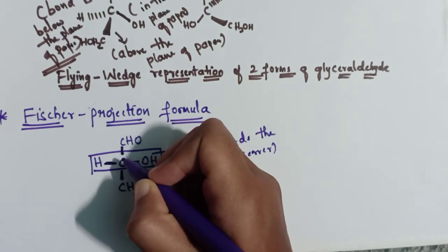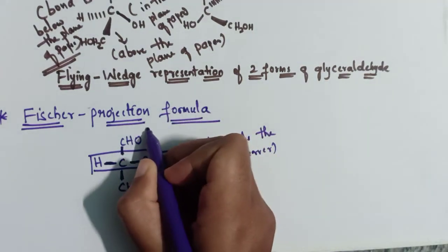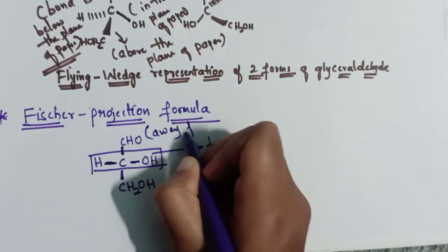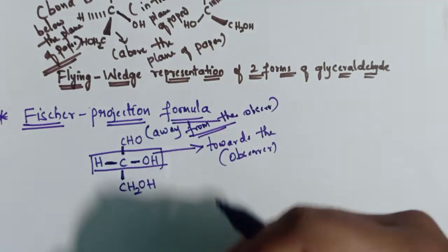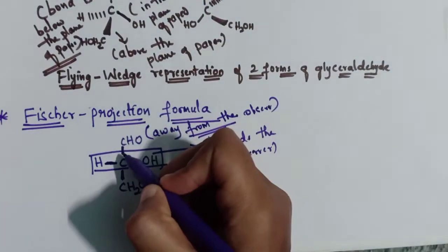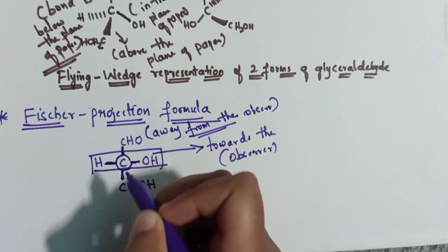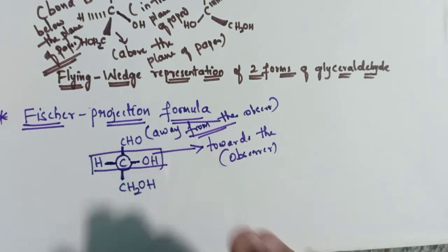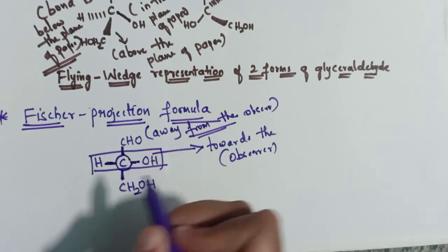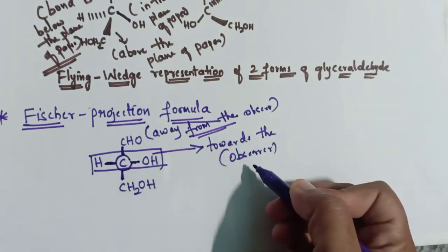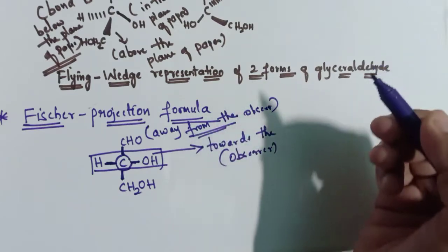The vertical bonds in Fischer projection are projecting away from the observer, which means they are below the plane of paper. The chiral carbon atom lies in the plane of paper. The horizontal bonds are towards the observer, that is above the plane, and the vertical bonds are away from the observer, that is below the plane.